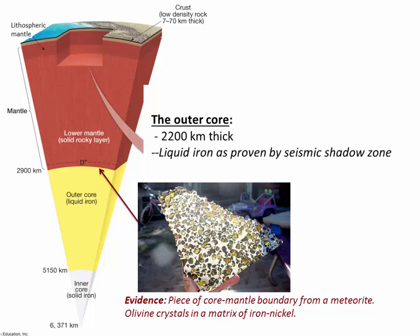Moving upwards, we have the outer core. It's also made of iron, but in this case it's liquid iron. We know that because certain types of seismic waves can't pass through liquids as they travel through the interior of the Earth. So we see a shadow — waves emitted on one side of the Earth don't appear on the other side because they're blocked by this liquid iron core.